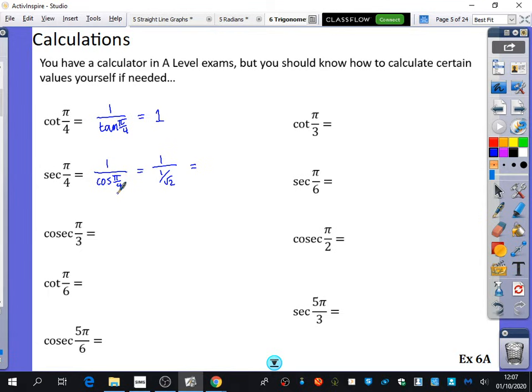The way you can see it from this rather confusing-looking fraction is to get rid of this fraction within the fraction, you can multiply the top and bottom by root 2. You'd have root 2 over 1. So we've got cosec of π over 3. That's going to be 1 over sine of π over 3. It's the reciprocal of sine of π over 3. What is sine of π over 3? Root 3 over 2, but we're going to do the reciprocal, so it's 2 over root 3.